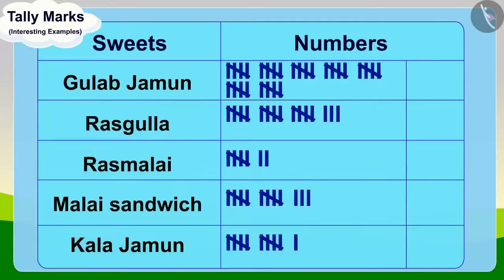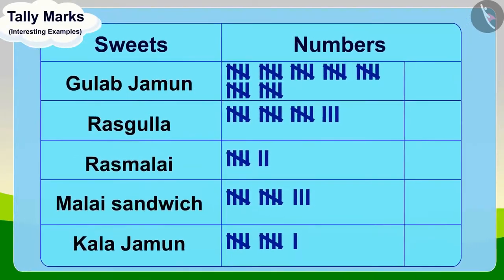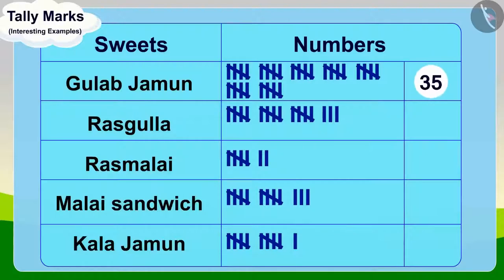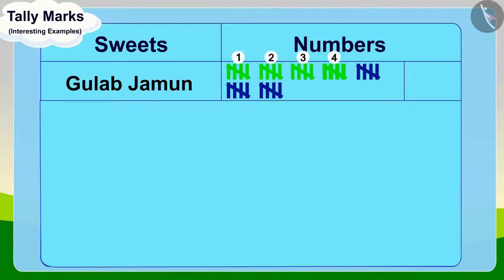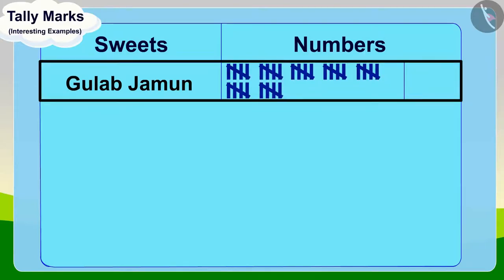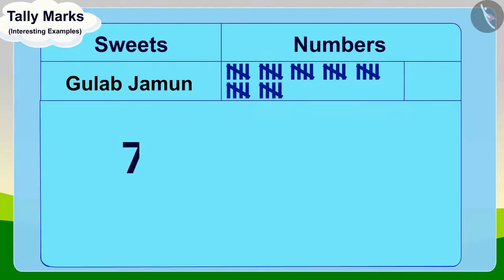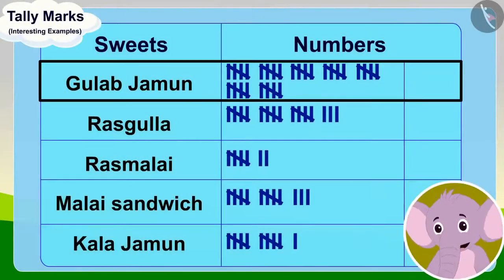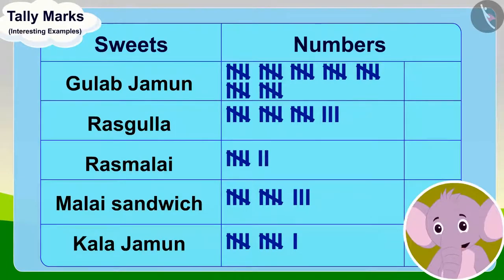Children, can you find out the number of Gulab Jamuns written in Appu's table? You can stop the video and find the answer. Well done, children. Your answer is absolutely correct. There are seven groups of five tally marks. So the total number of Gulab Jamuns will be seven times five, thirty-five. Appu also found out the number of Gulab Jamuns and wrote them in the table.